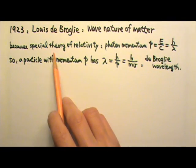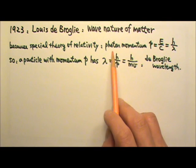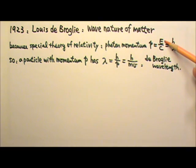According to the special theory of relativity, a photon has momentum P that equals to the photon energy E divided by the speed of light in vacuum C.